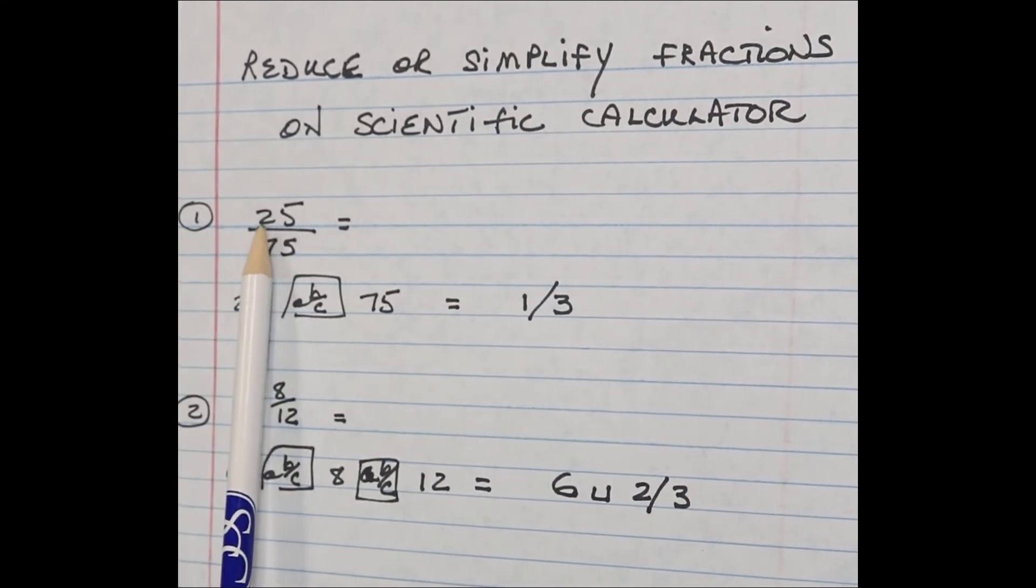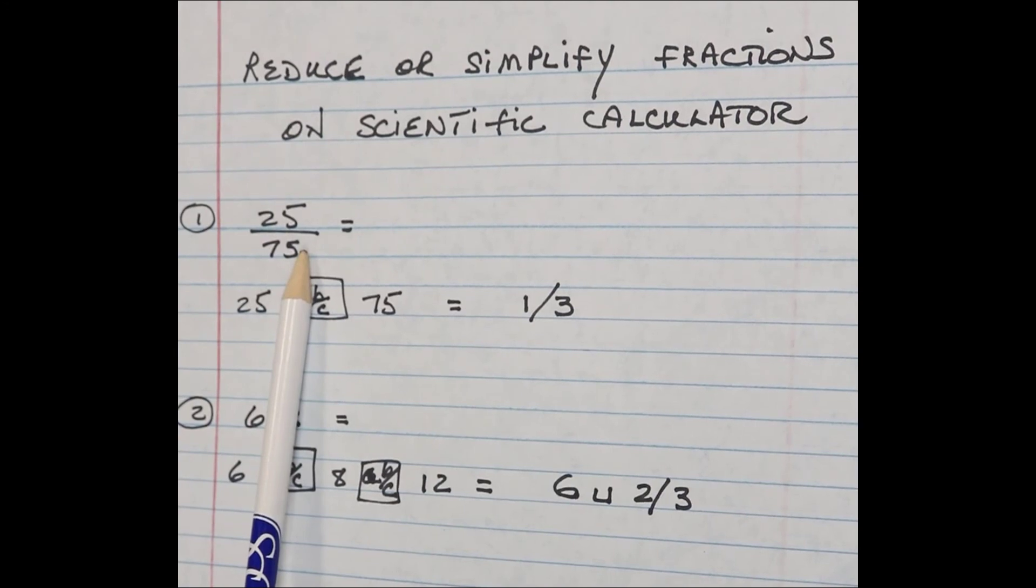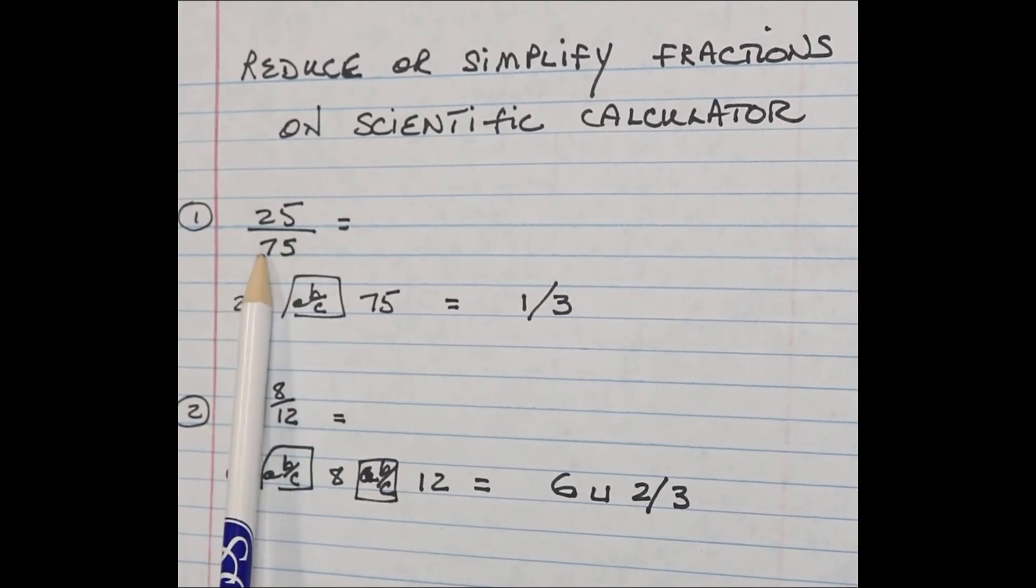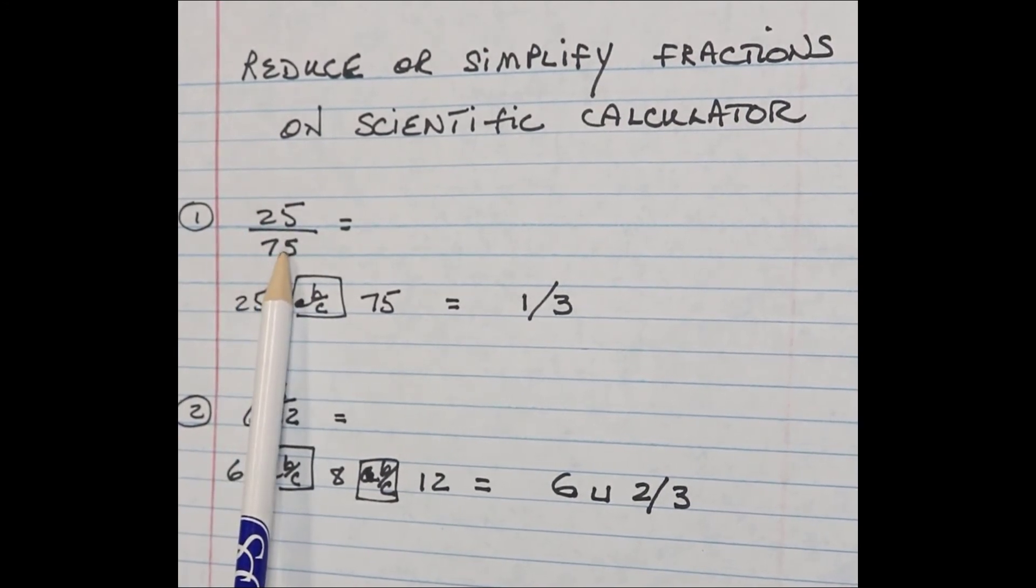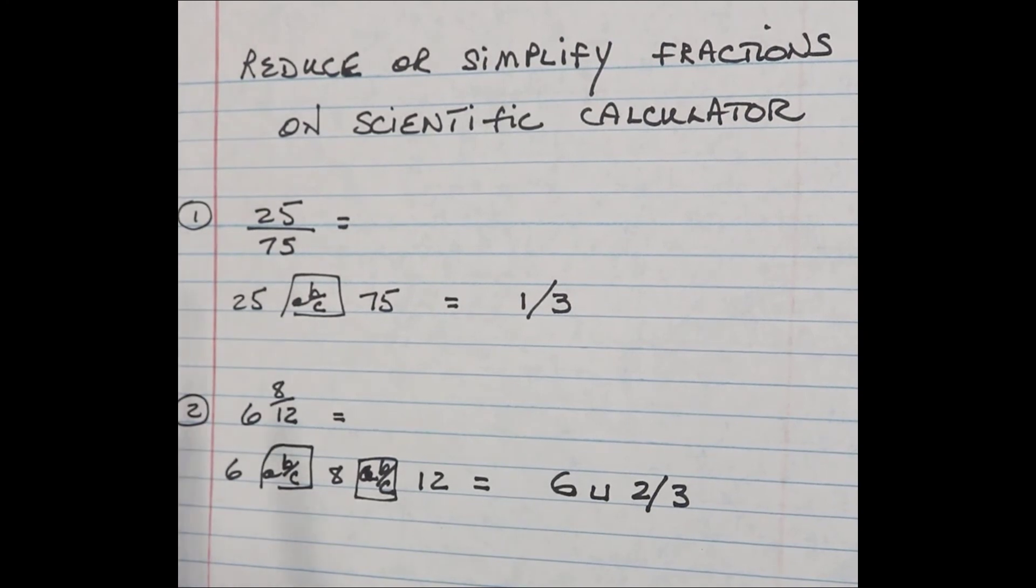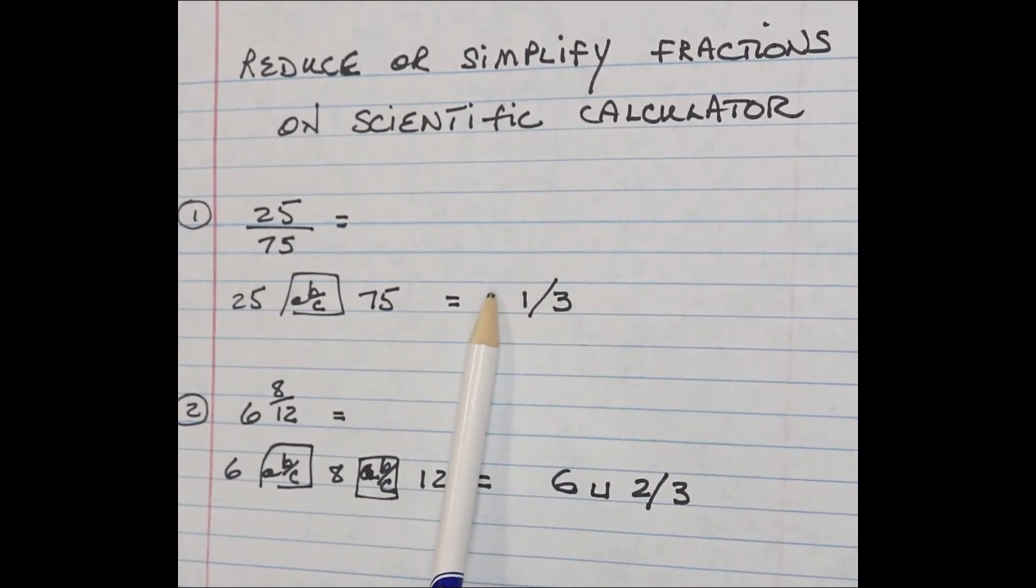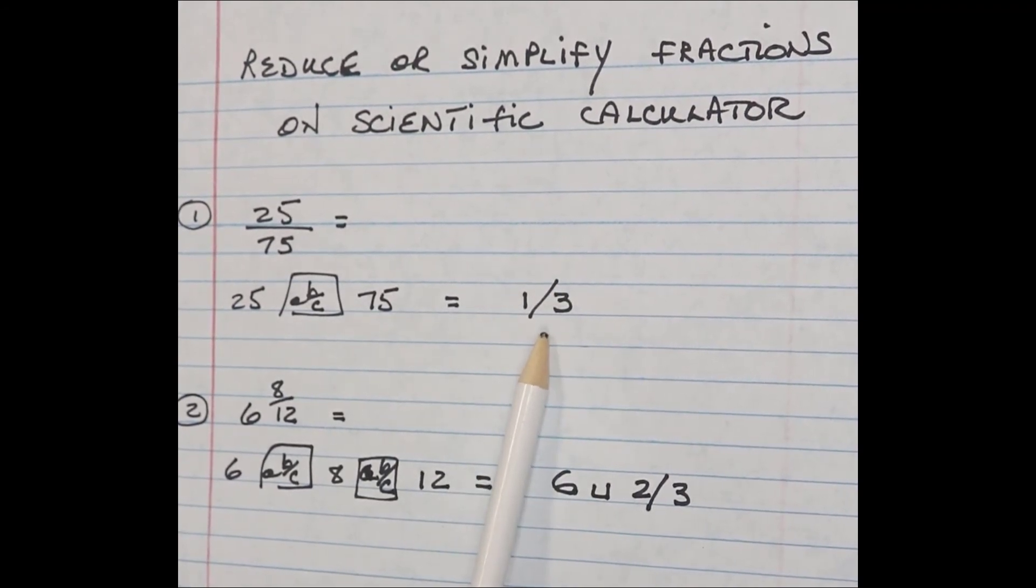So I have a couple of fractions here that are not simplified or not reduced. First one is 25 over 75. I'm going to type that in for you in just a second. I'm going to type the 25, the fraction key, the 75, and then press equals. And it's going to reduce it down to its simplest form.